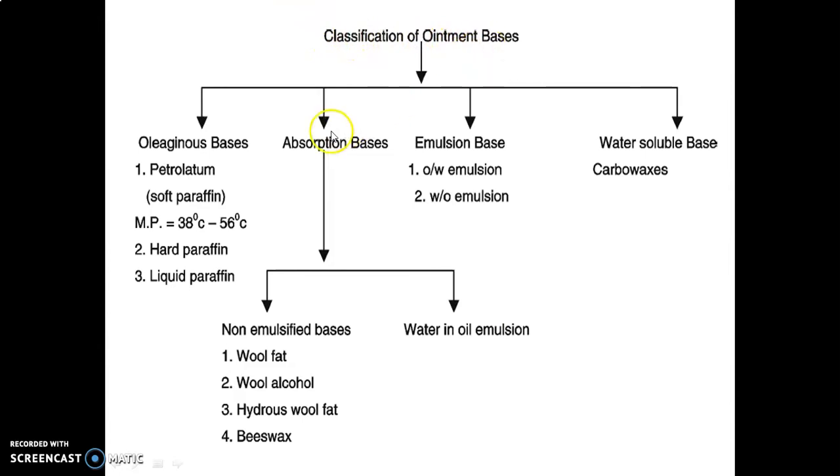Next, classification of ointment bases. There are four main classes: oleaginous base, absorption base, emulsion base, and water-soluble base. In oleaginous base, the first type is petrolatum, that is soft paraffin with melting point of 38 to 56 degrees Celsius, second is hard paraffin, and third is liquid paraffin.